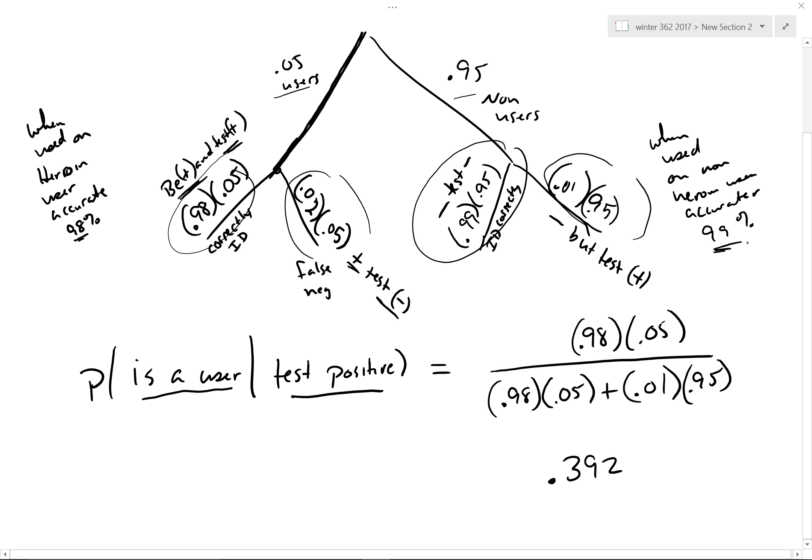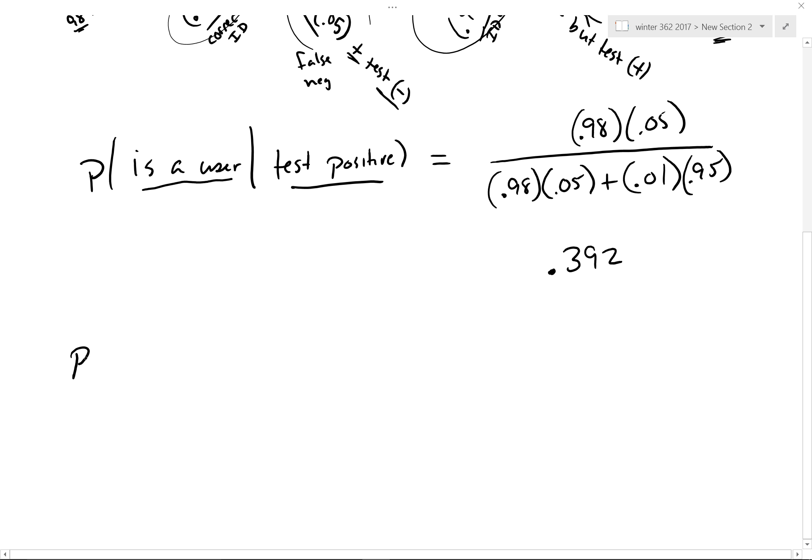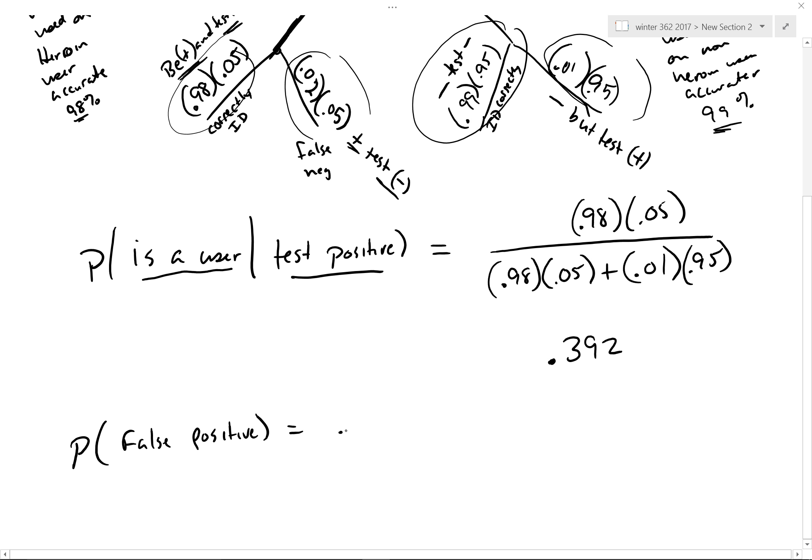So that's how Bayes' theorem works. You could also say, what's the probability of just getting, period, a false positive? This isn't Bayes' theorem but you can use it from this same situation. And a false positive of course is this guy here times this guy here.